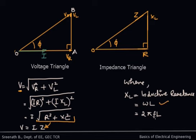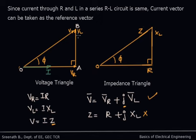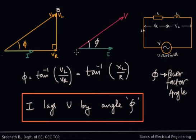XL is the inductive reactance given by ωL or 2πfL, where f is the source frequency. Vr = I×R, Vl = I×XL, and V = I×Z where Z is the impedance. Using the J operator, the source voltage can be written as Vs = Vr + j·Vl. Similarly, Z = R + j·XL. Note that the voltage triangle is in vector form while the impedance triangle is in scalar form.